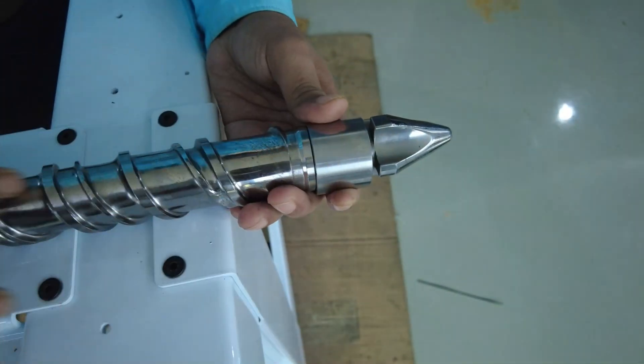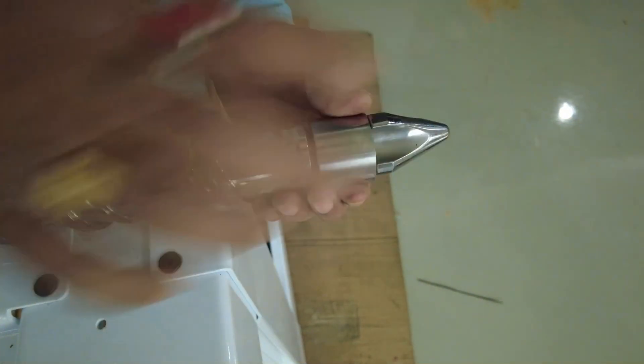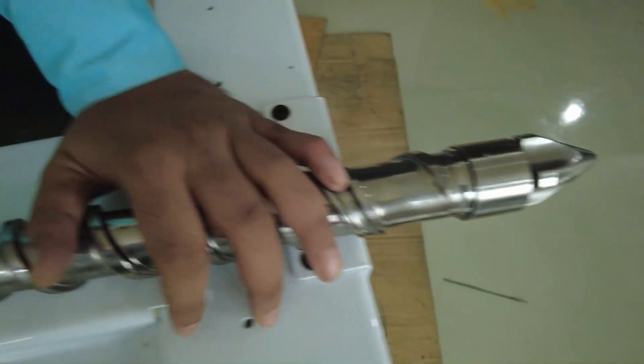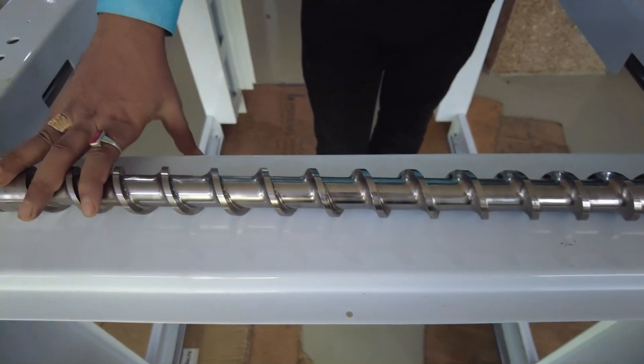This is a very important screw in terms of injection molding machines. This ring moves forward and backward, which is why we call it a reciprocating screw.